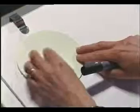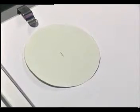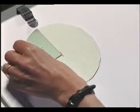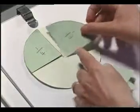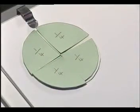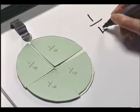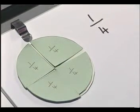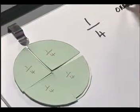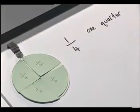Let's have a look. I've got a representation here of a whole, and let's say we want to divide it into four equal pieces. So there we've taken one whole and divided it into four equal pieces, so each piece represents one quarter.